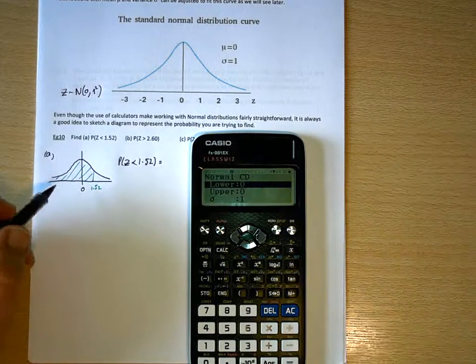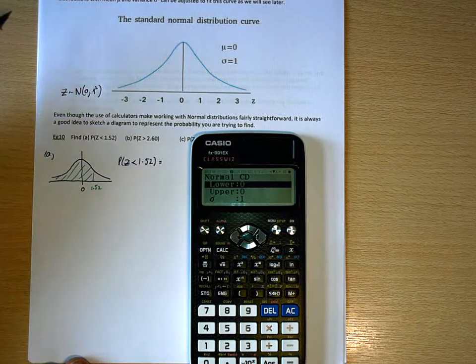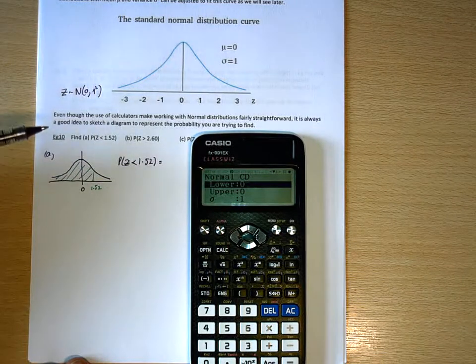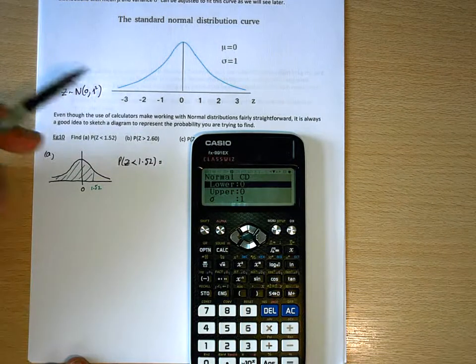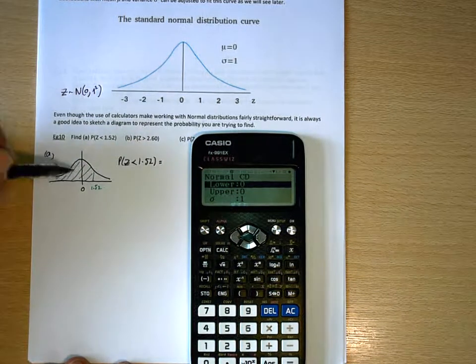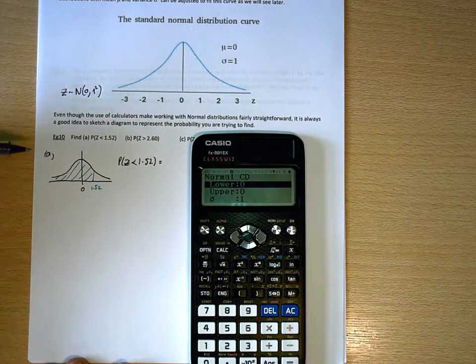And then, when we are required to put a lower boundary in, when we went through the properties of the normal distribution curve, we know that the x-axis goes from minus infinity to plus infinity. But within three standard deviations, the area gets very, very small.